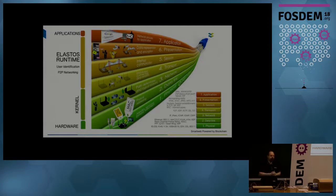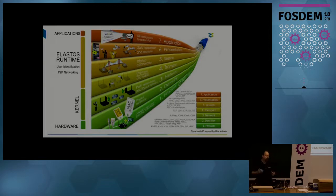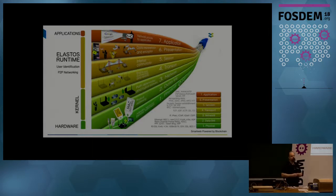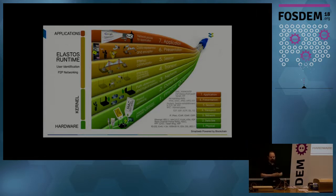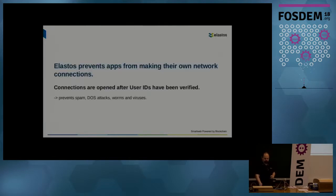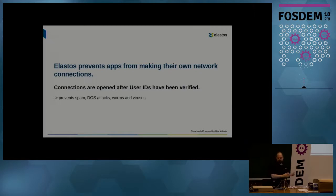User identification is handled at the operating system level, and all applications can take advantage of it. The applications themselves can no longer connect to the network on their own — they have to ask the operating system for permission. That way we essentially solve the problems we've been seeing, because we prevent apps from making their own network connections, and so we prevent spam, DOS attacks, worms, viruses, and so on.